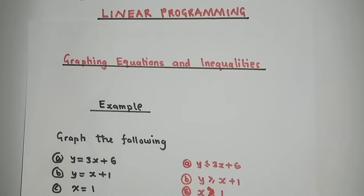Linear programming has its own language. When you come across words like 'at least,' 'more than,' 'greater than,' or 'exceed,' it means greater than or equal to (≥). When you see 'at most,' 'less than,' or 'not exceed,' it means less than or equal to (≤). For example, if someone has at least five bags of maize — represented by x — we write x ≥ 5.